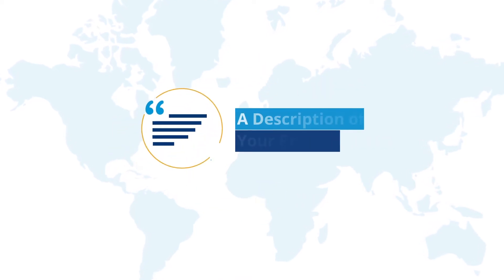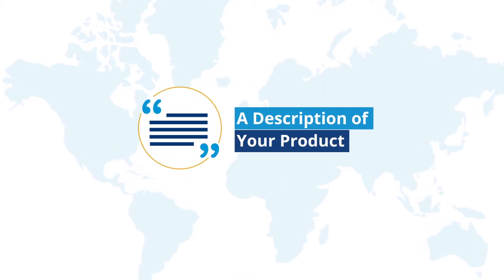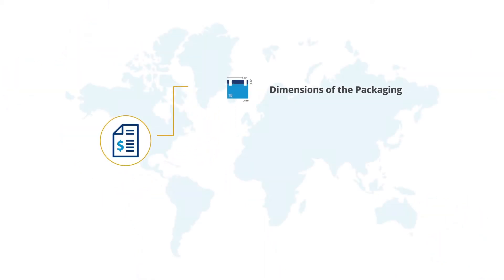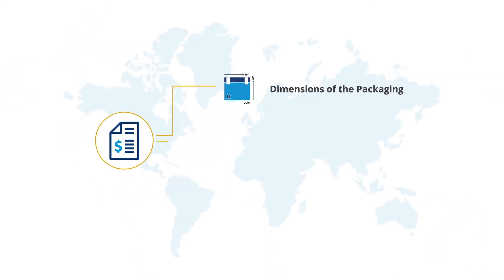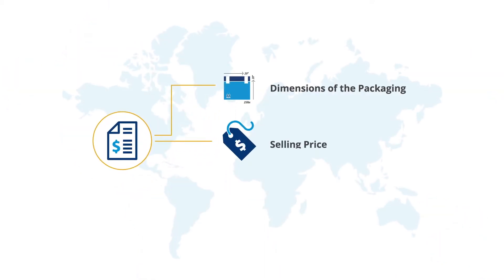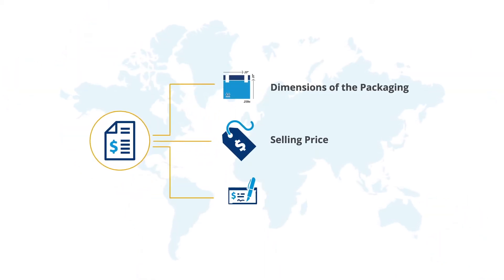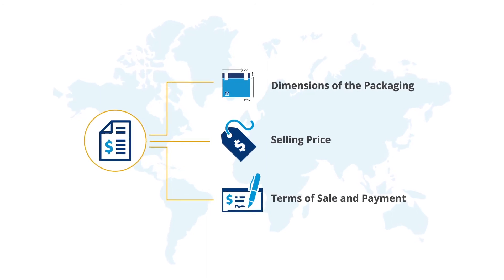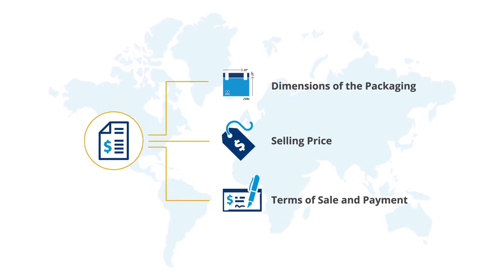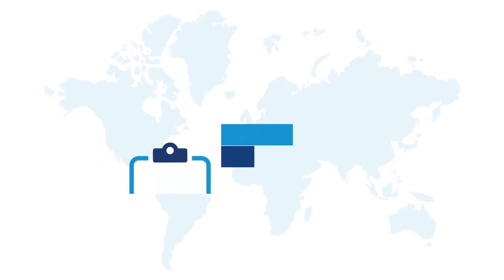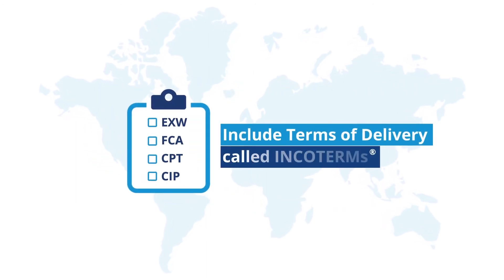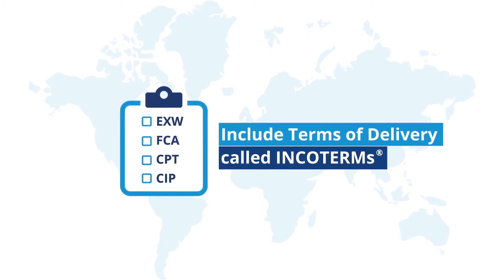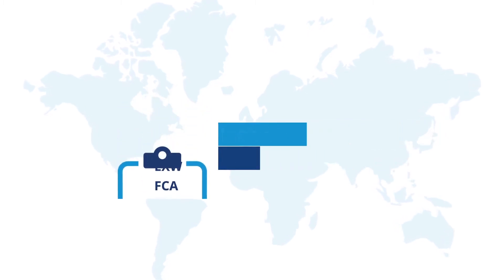A pro forma invoice should include a description of your product, including its weight and dimensions of the packaging, the selling price, and specific terms of sale and payment. You'll also want to include terms of delivery, called Incoterms.